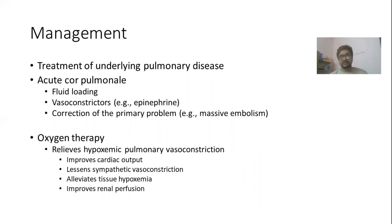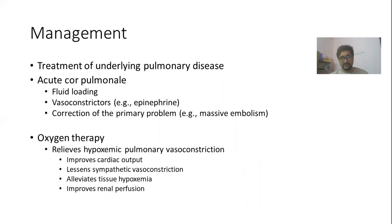Oxygen therapy is one of the most important treatments for cor pulmonale. It relieves hypoxemic pulmonary vasoconstriction, improves cardiac output, lessens sympathetic vasoconstriction, improves renal perfusion, and alleviates tissue hypoxemia. Every patient with cor pulmonale should be assessed and prescribed long-term domiciliary oxygen therapy.